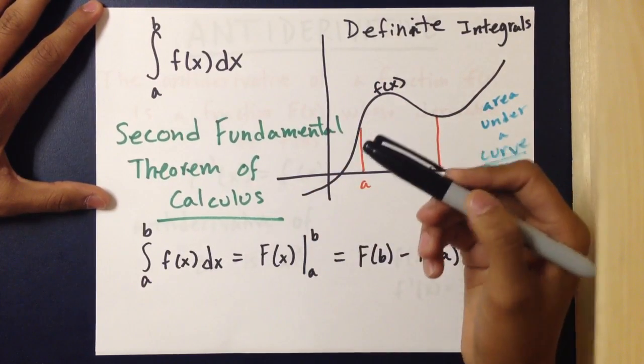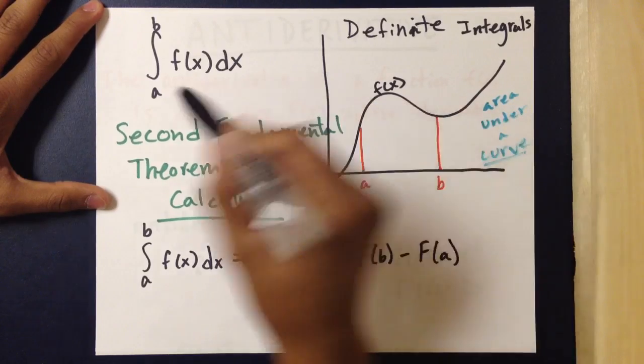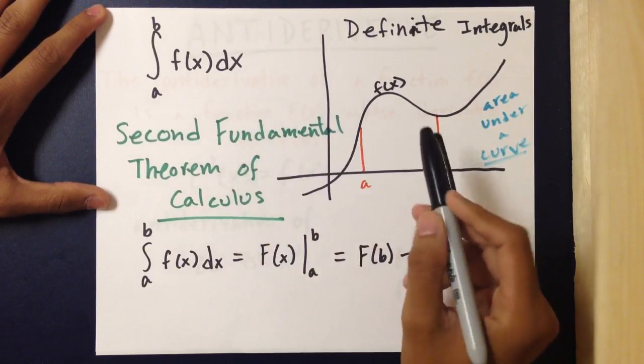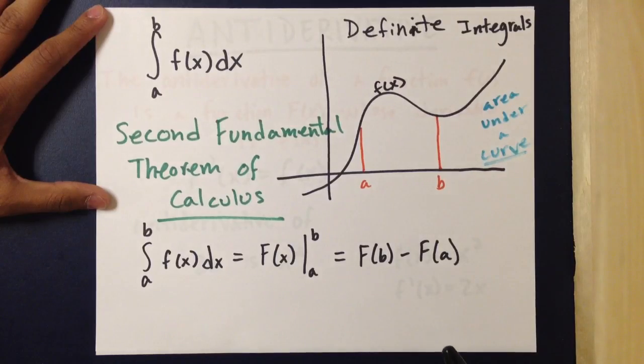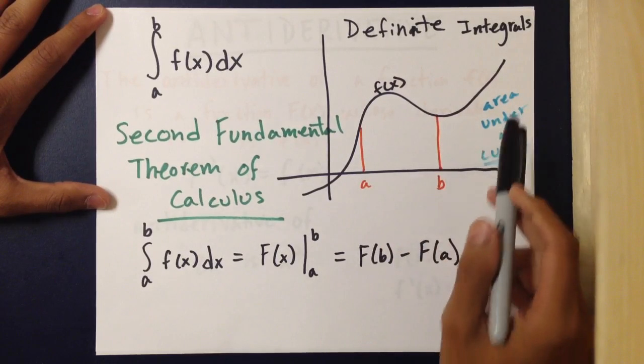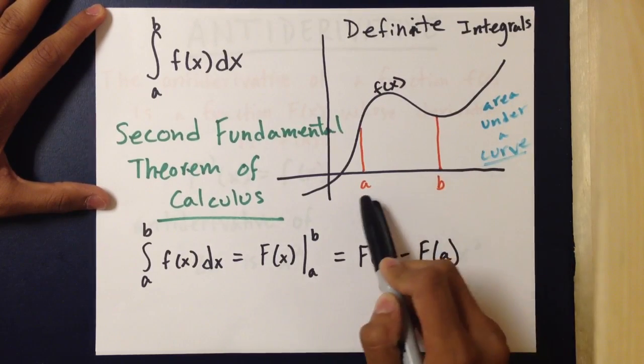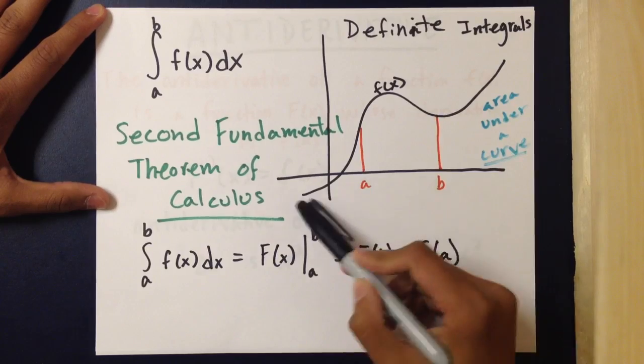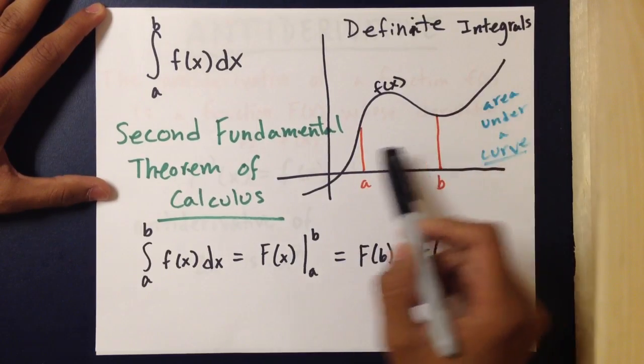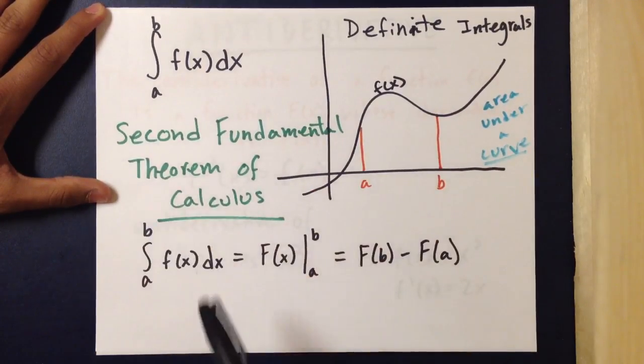Now we're moving on to definite integrals, which use this notation. The difference between a definite integral and an indefinite integral is that a definite integral asks for the area under a curve from points A to B of any function. The way to solve this is using the second fundamental theorem of calculus.